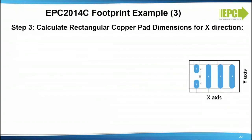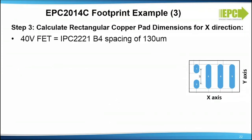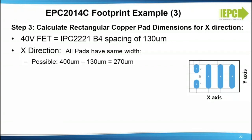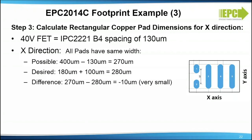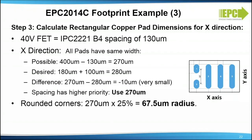Step 3: calculate rectangular copper pad dimensions for the x-direction. Given this is a 40-volt FET, the IPC 2221 spacing is 130 micrometers. In the x-direction, all pads will have the same width. The maximum possible pad width is 270 micrometers; the desired pad width size is 280 micrometers — the difference is minus 10 micrometers, which is very small. Since spacing is a higher priority, use 270 micrometers for the width. The pad width is the narrowest pad dimension, so the corner radius becomes 67.5 micrometers.